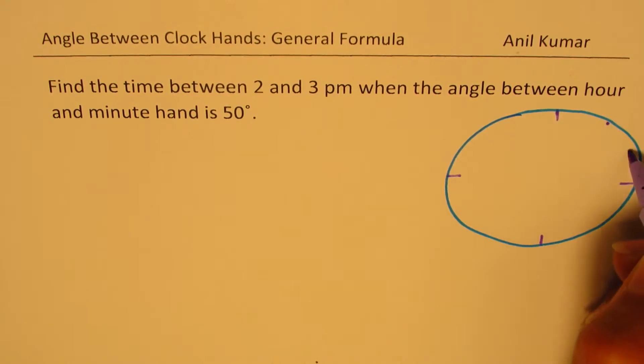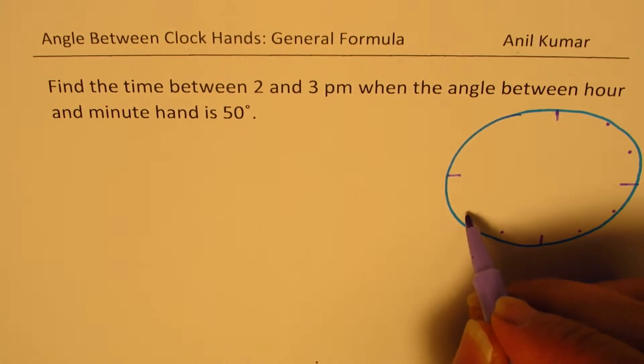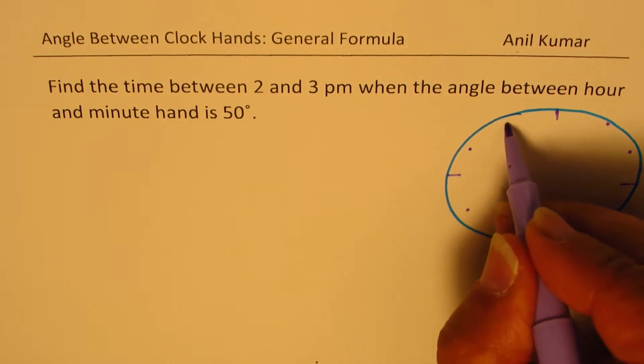So let's say this is 1 for us, this is 2, that is 3, 4, 5, 6, 7, 8, 9, 10, 11, and 12.